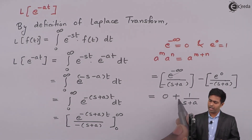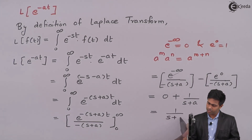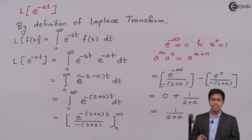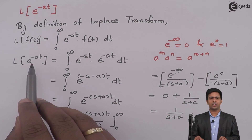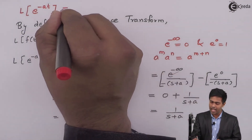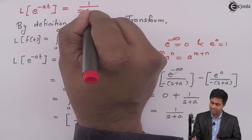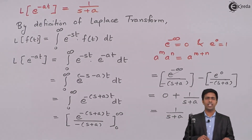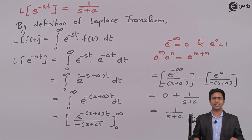So if we add this term to 0, we will get 1 upon s plus a. This means we got the value of Laplace of e raised to minus at as 1 upon s plus a, by using the definition of Laplace transform. Thank you.